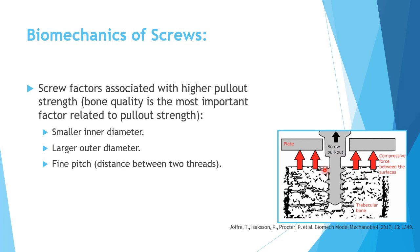To increase screw pull-out strength, use a smaller inner diameter and larger outer diameter. A fine pitch — meaning a smaller distance between threads — gives you more threads protruding into bone. The shaft of the screw will be smaller, so you have more bone in that area and more threads because the pitch is finer, resulting in more bone between the threads.